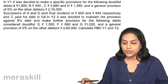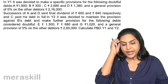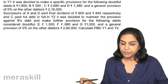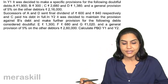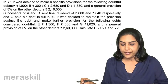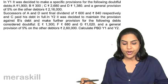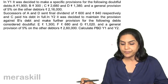In Year 2, it was decided to maintain the provision against B's debt and make further provision for the following debts considered doubtful: E - 1,300; F - 680; and G - 1,020; along with a general provision of 5% on other debtors at 2,60,000.